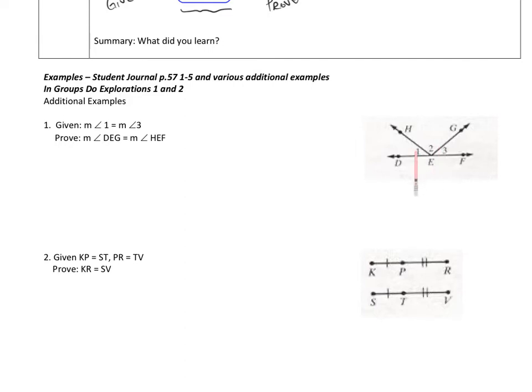On this first example, we are told that the measure of angle 1 is equal to the measure of angle 3. We are to prove that the measure of angle DEG is equal to the measure of angle HEF. DEG would be this full angle and HEF would be this one.